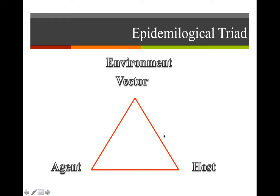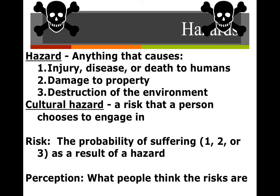Here we have the epidemiological triangle, where the factors affecting our health are the environment, our agents, and us — the host. When we look at hazards, hazards are anything that's going to cause injury, death, or create a disease that could affect my health, damage your property, or cause destruction to the environment. For example, too much ice or snow accumulating on a building could cause it to cave in, and lots of water over time could create potholes or loosen soil and create sinkholes.